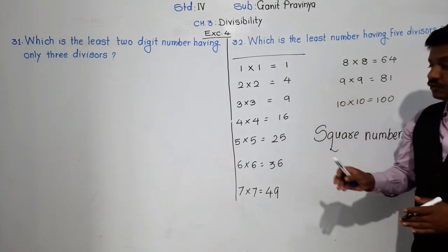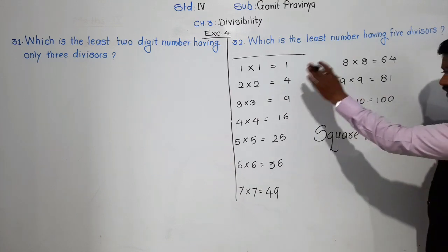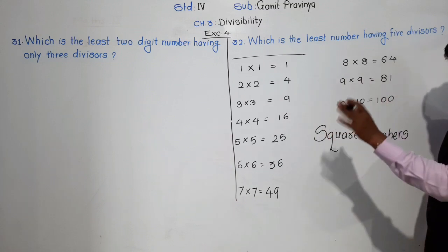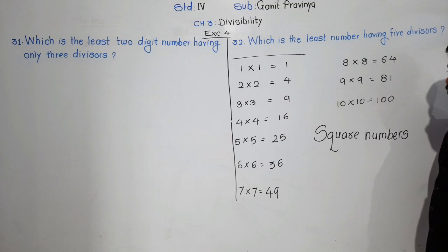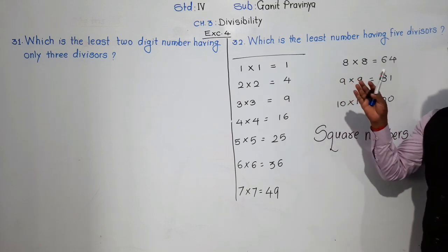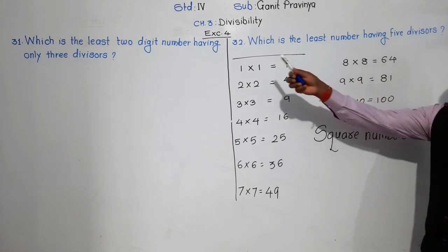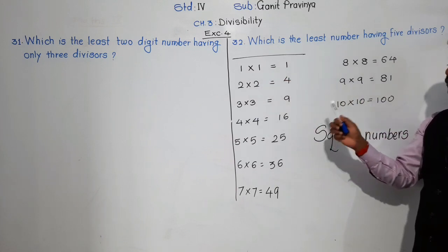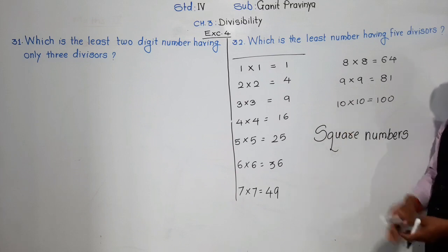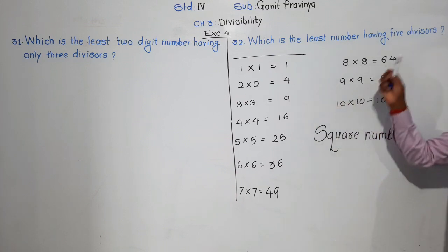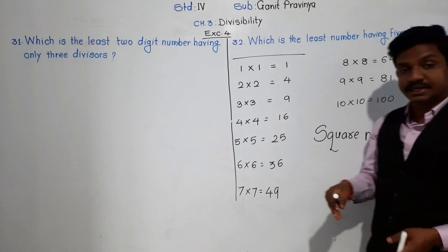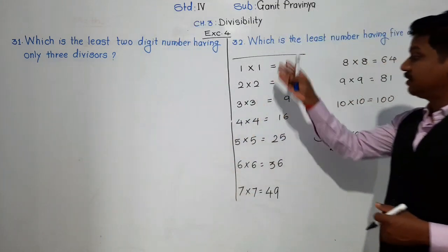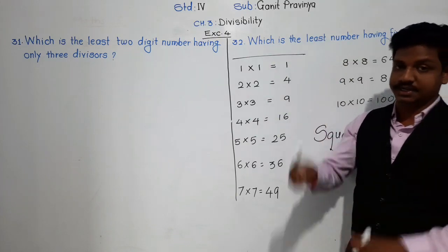Please pause this video and write this down. Write it immediately in your notebook, somewhere in the corner or on the last page. If possible, memorize these numbers: 1×1=1, 2×2=4, 3×3=9, 4×4=16, 5×5=25, 6×6=36, 7×7=49, 8×8=64, 9×9=81, 10×10=100. Learning these by heart will be very helpful. I will tell you later why I have given these numbers here.